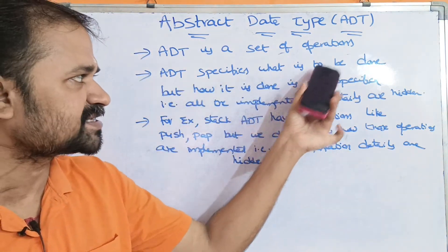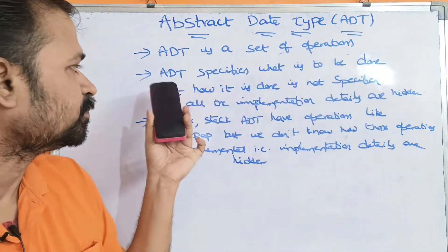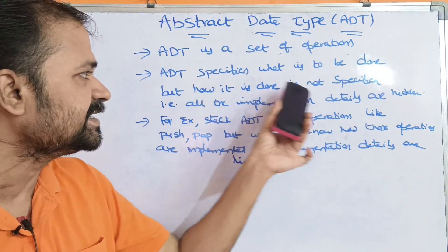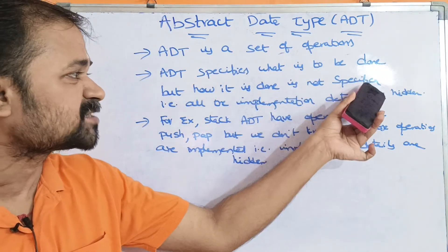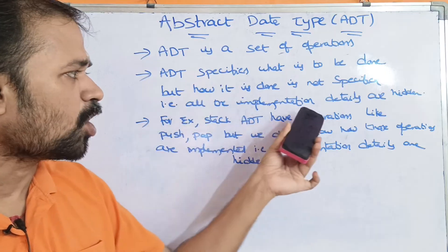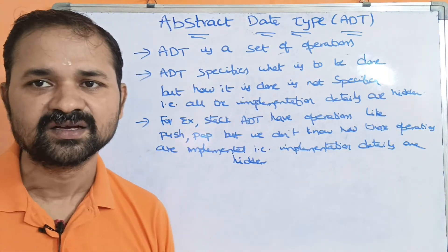ADT specifies what is to be done, but how it is done is not specified. That is, all the implementation details are hidden.